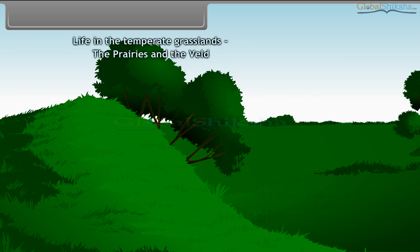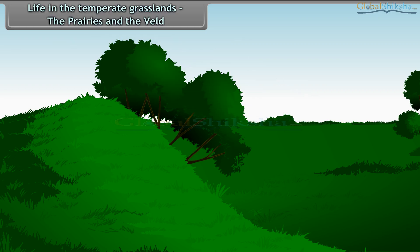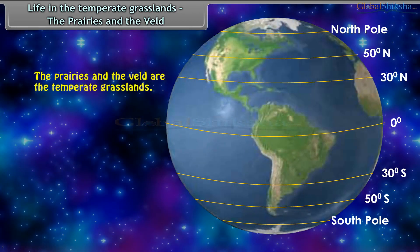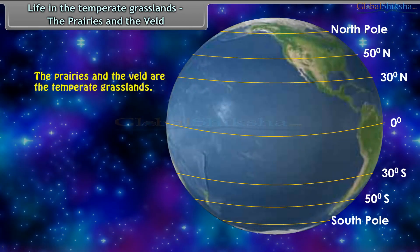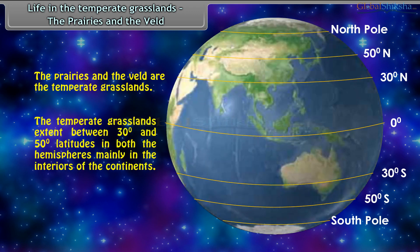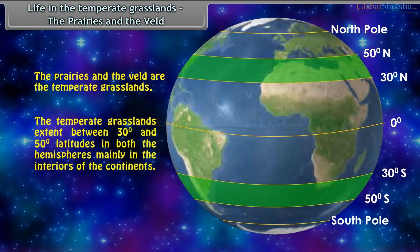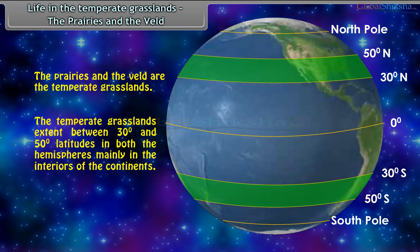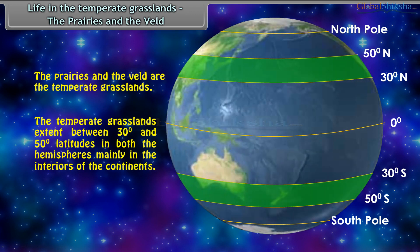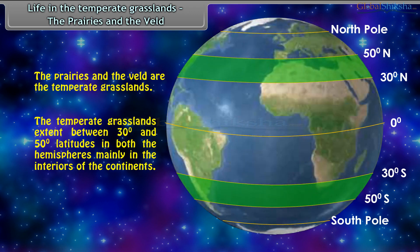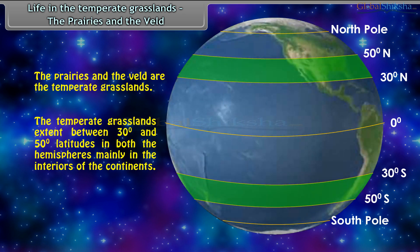Life in the Temperate Grasslands: The Prairies and the Veld. The Temperate Grasslands extend between 30 degrees and 50 degree latitudes in both the hemispheres, mainly in the interiors of the continents.